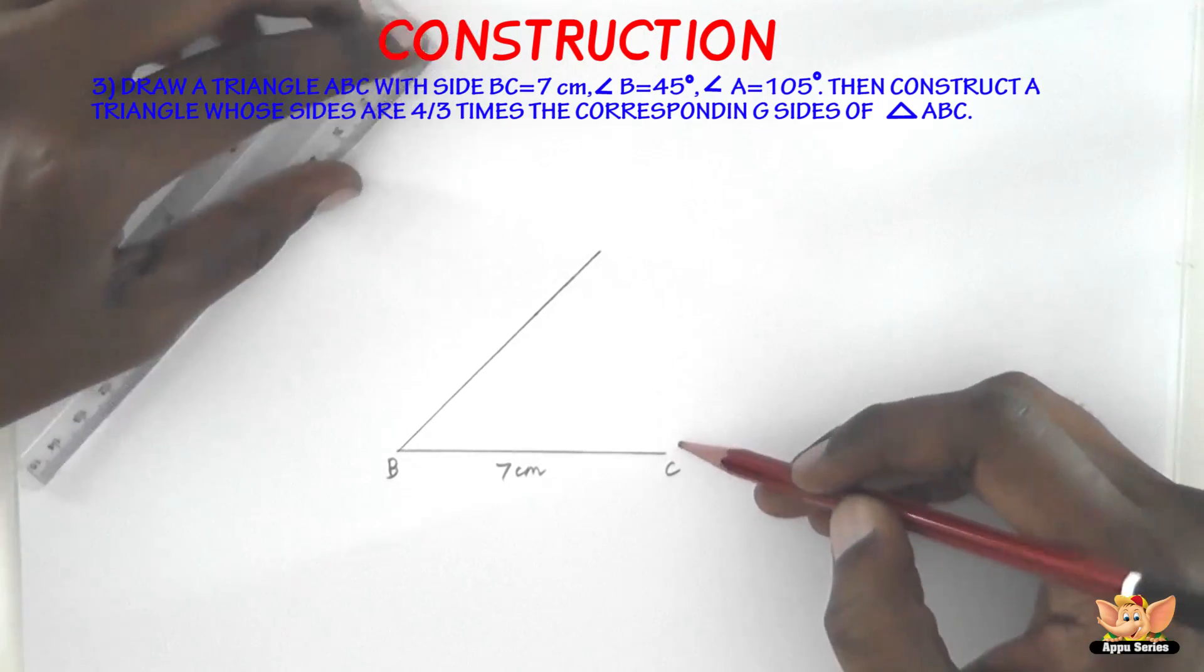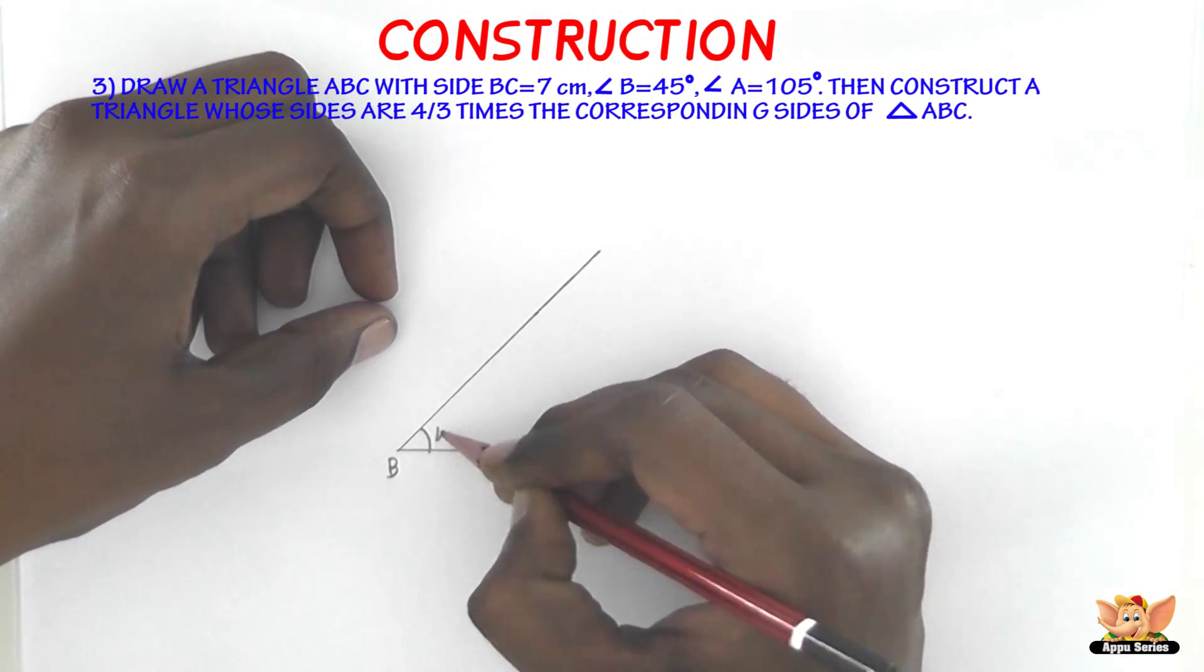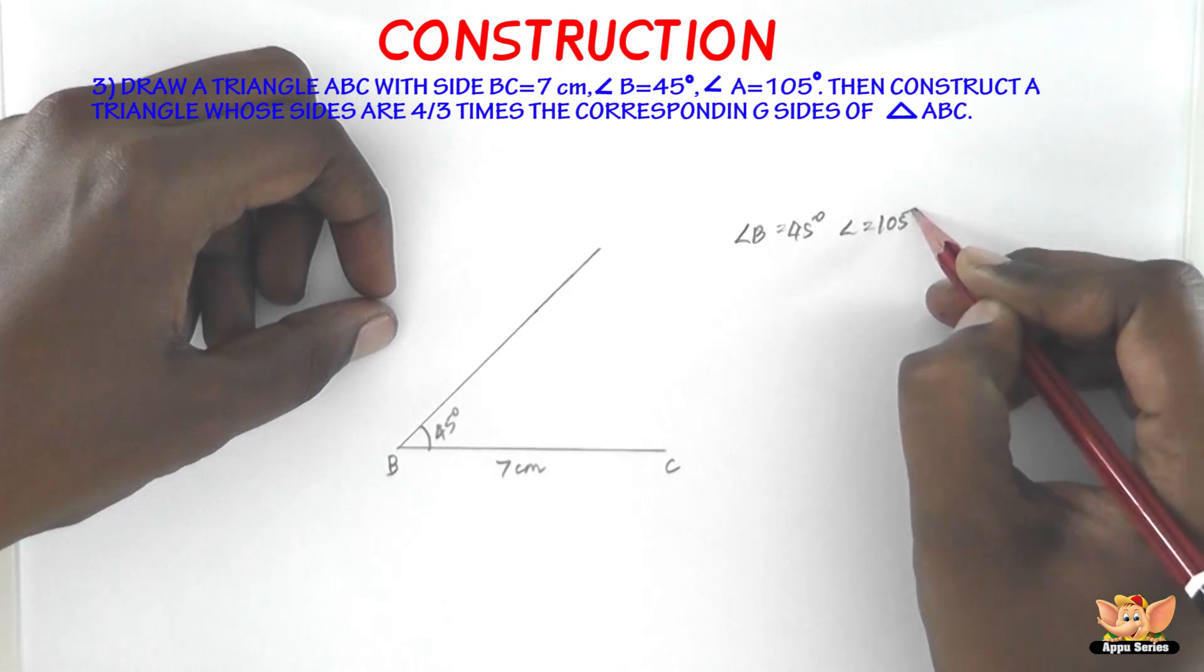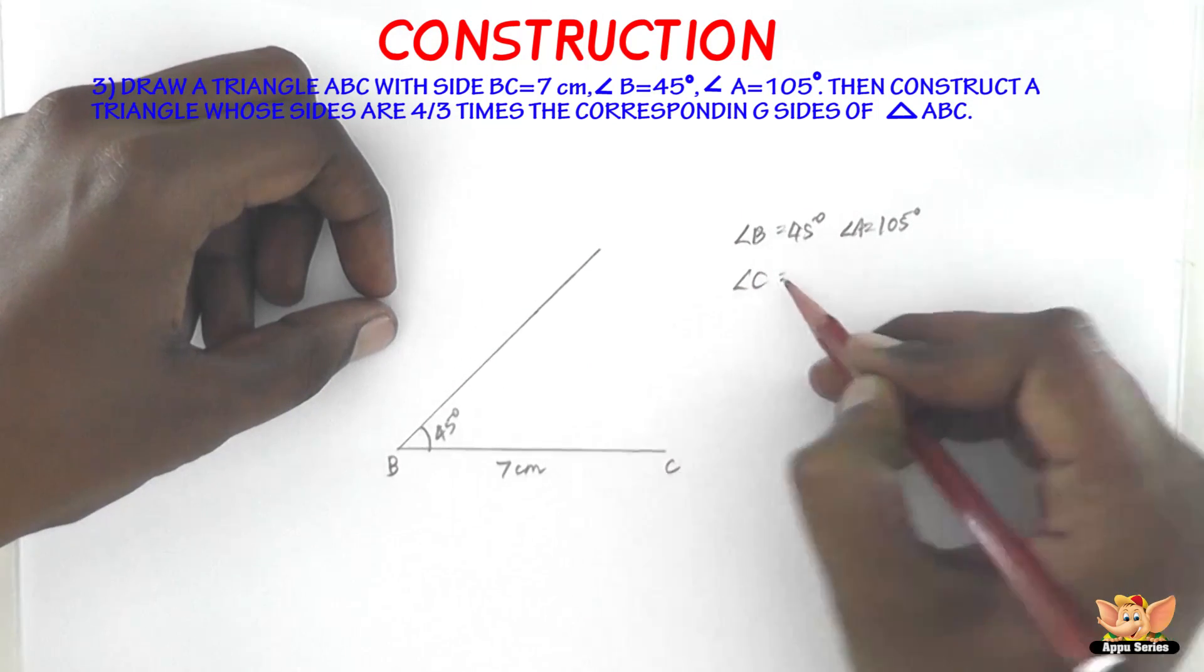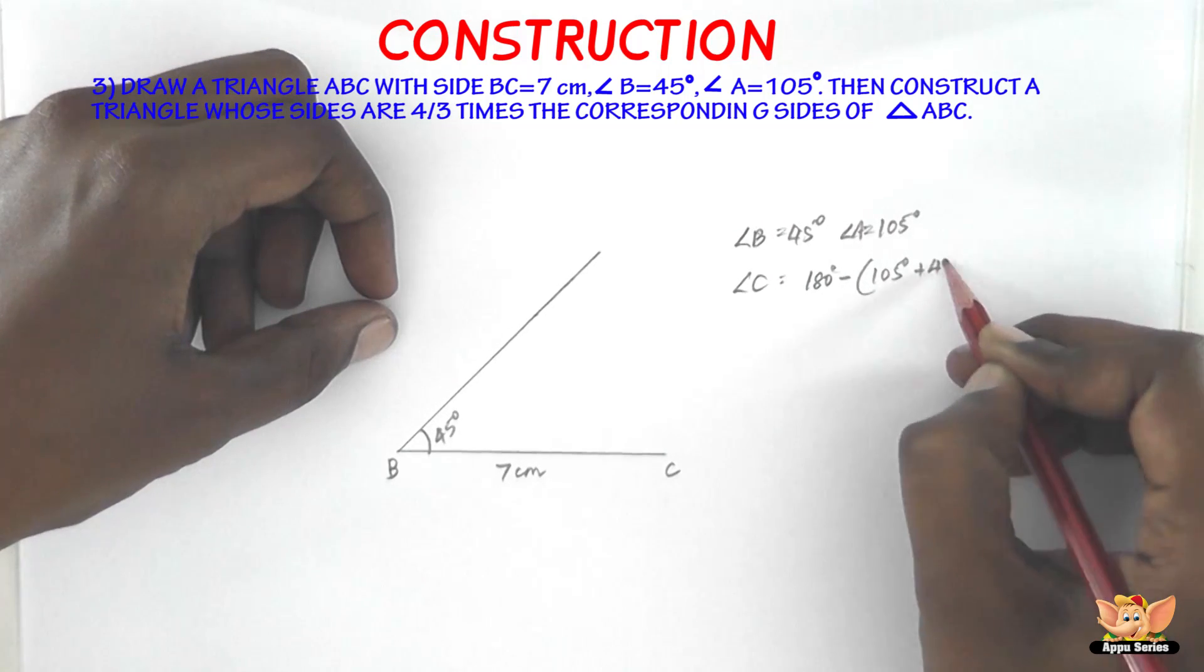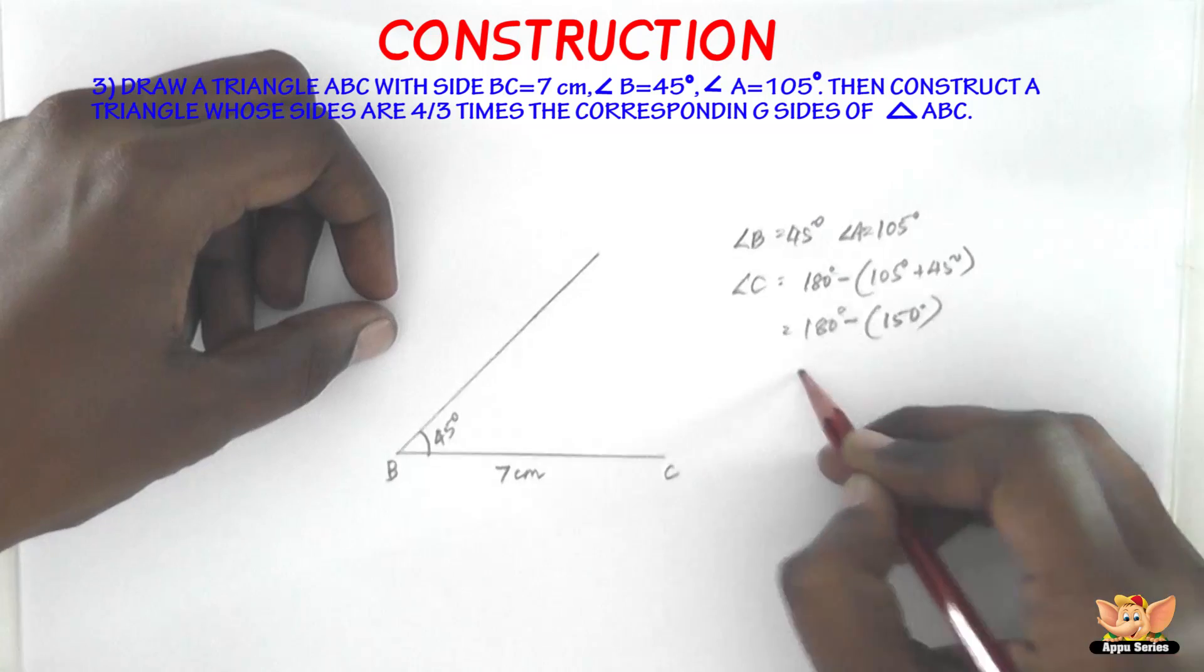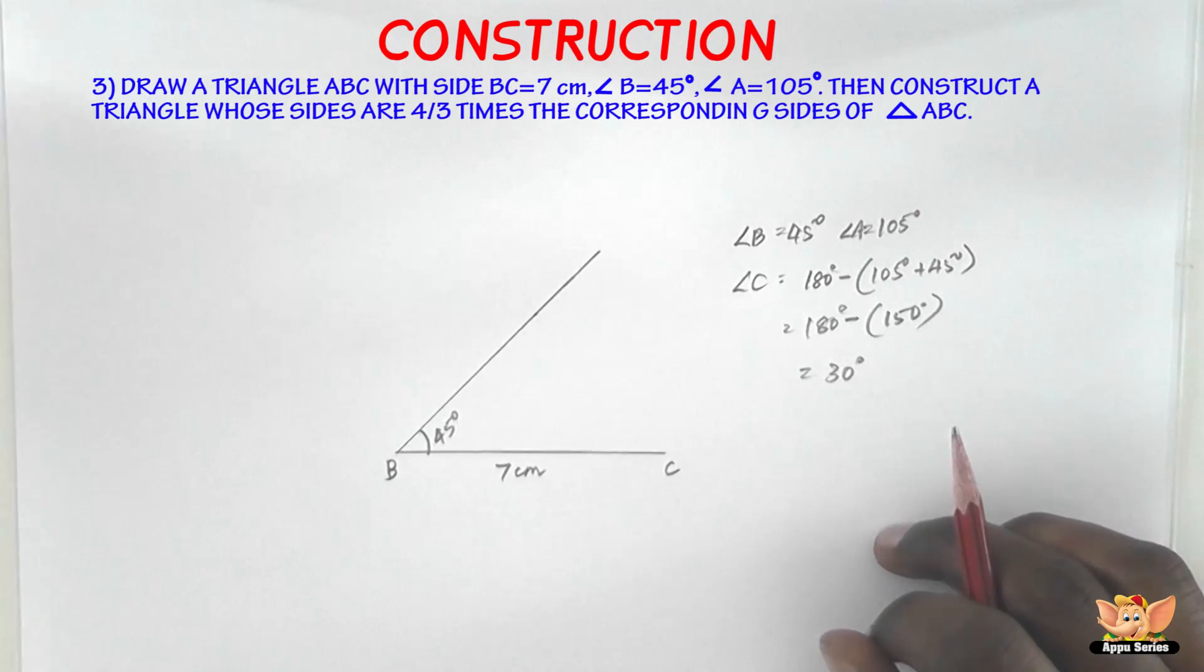Angle A is given as 105 but we do not have angle C. So therefore, we've got angle B as 45 degrees and angle A as 105 degrees. So let's find angle C. Angle C will be equal to 180 degrees minus (105 degrees plus 45 degrees), which is 180 degrees minus 150 degrees. That comes around to 30 degrees. So angle C equals 30 degrees.